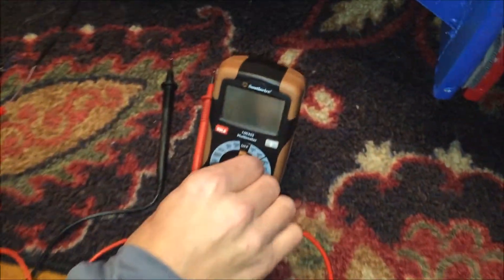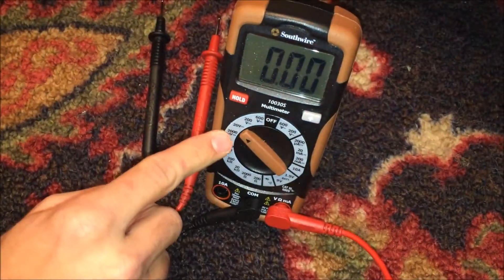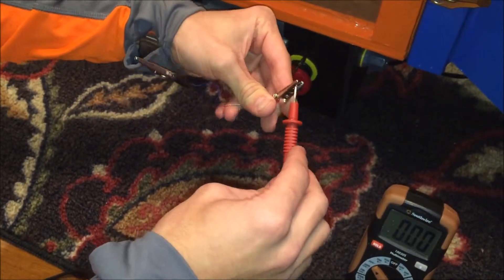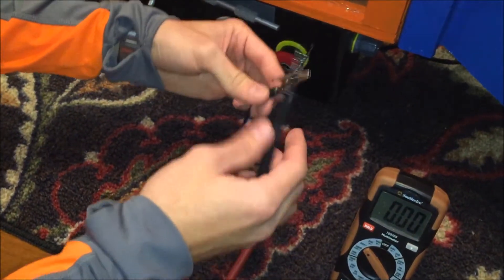To hook up the multimeter, turn it on to setting 20V. Then take the red end and hook it up to the red alligator clip. Repeat this step for the black end.